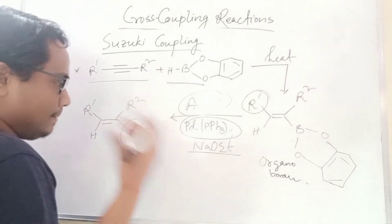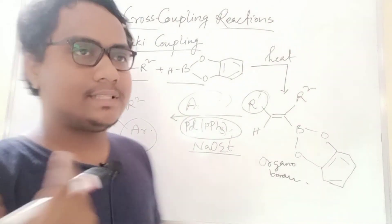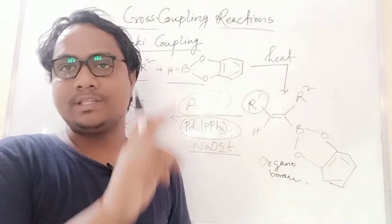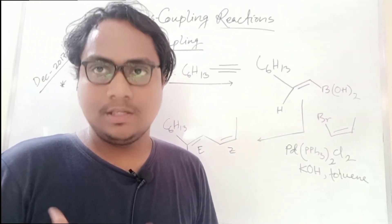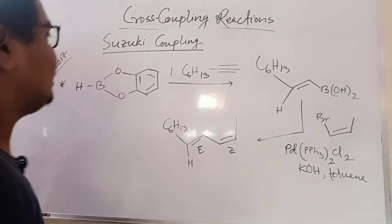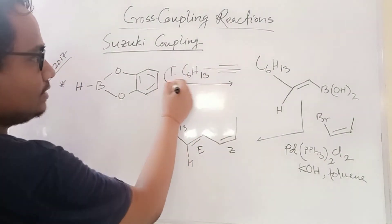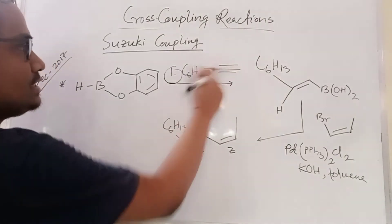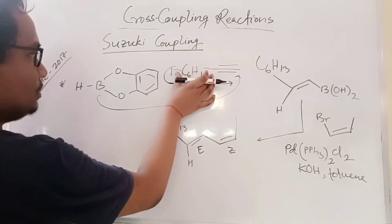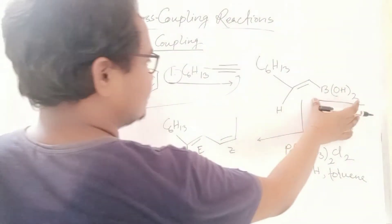Wherever the boron is, that side is coupled — the mechanism is the same as Stille coupling: oxidative addition, reductive elimination. This example clarifies understanding of the Suzuki reaction. Using a trisubstituted alkene, first hydroboration happens — because of the steric position, boron goes to the less hindered side.